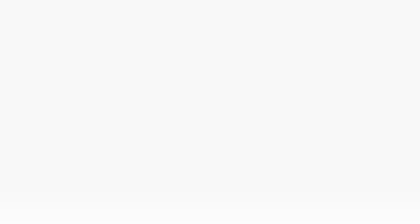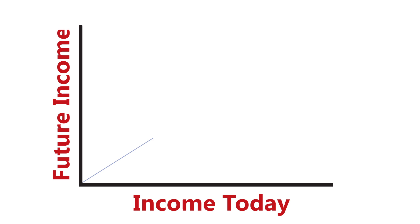For people in extreme poverty, current investments in things like education will not have an immediate positive effect on future income. As you can see from the graph, money someone makes today doesn't help them make money in the future until they make a certain amount.